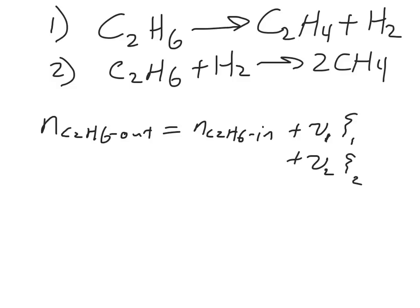In this case, these are both negative 1 because there's 1 here and a 1 here. But C2H6 is a reactant in both equations, so it's negative 1. So in actuality, this equation tells us that the number of molecules of C2H6 out is equal to the number of molecules of C2H6 in minus extent 1 minus extent 2.